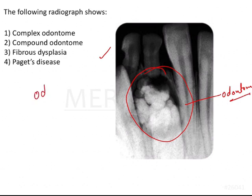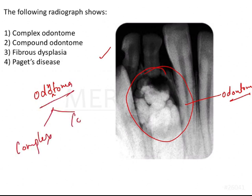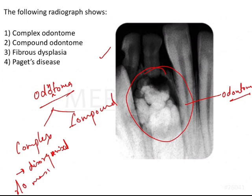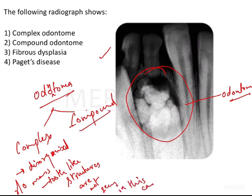Odontomas are of two types: complex and compound. The basic structural difference is that complex odontomas are a disorganized, radiopaque mass where tooth-like structures are not visible. In contrast, compound odontomas look like a bunch of tooth-like structures.